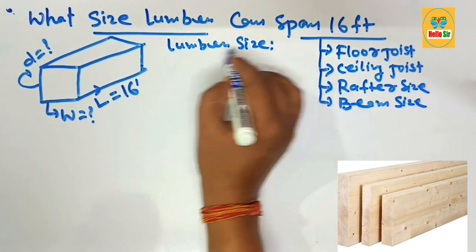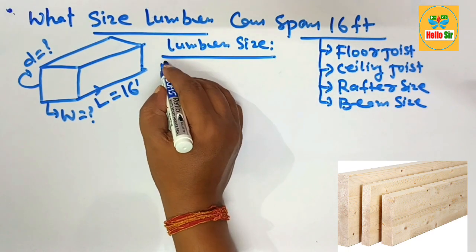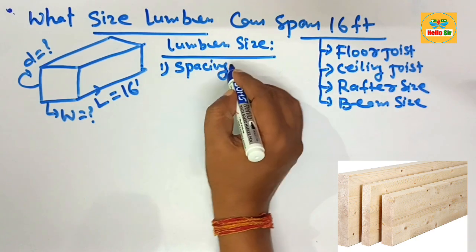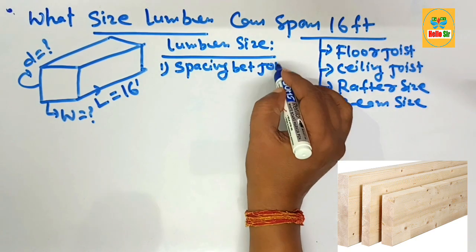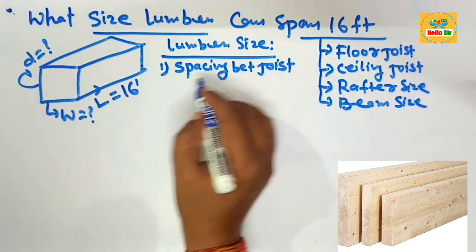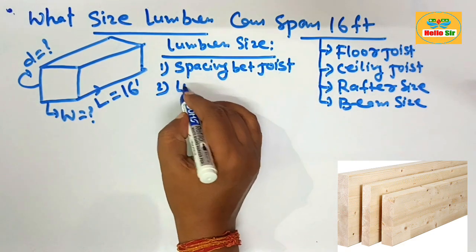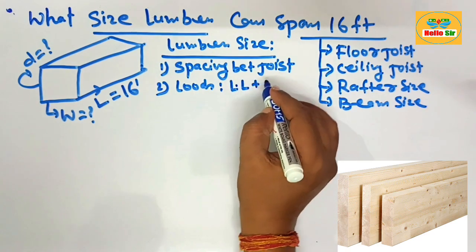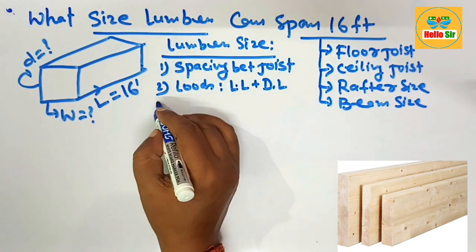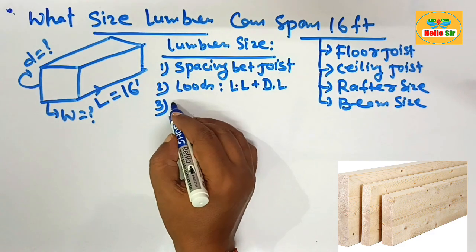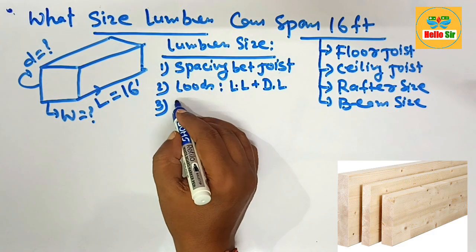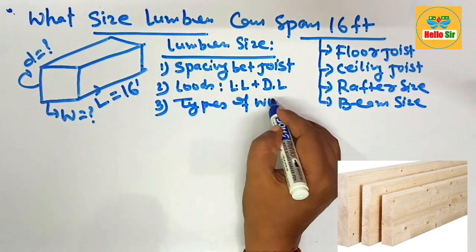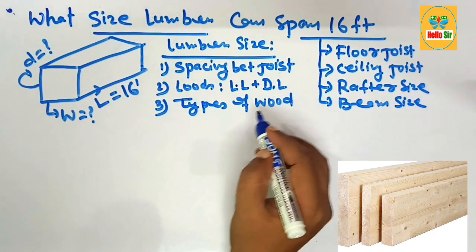This is the depth section of the lumber you have to calculate. The lumber size depends on many factors. The first factor is the spacing between the joists, which is about 16 inches on center. The second is the load acting on it, consisting of live load and dead load. The third major factor is the species and grade of wood you select.